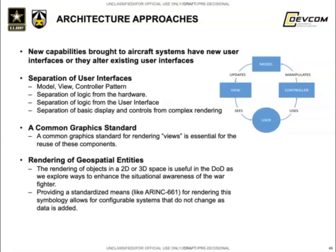Another thing to consider is the rendering of geospatial entities. Many new capabilities we bring to aircraft systems include improving the situational awareness of the air crew by informing them of objects and entities around the aircraft. Having a common interface for sending geospatial entities can allow for configurable core components to render this situational awareness data, and can allow new capabilities to be added to the SA system without recompilation or requalification of the SA system itself.